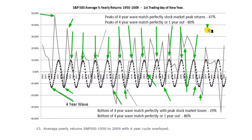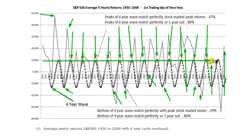Peak market returns for early 2000 were exactly predicted by the four-year cycle, followed by a pullback. To recap: 47% of the time the four-year cycle predicted the peak market returns accurately. The wave peak was also accurate or one year out 80% of the time. And in 93% of the cases of the wave peaking, the S&P made positive returns — 93% of the time. Nearly every single peak except one is a positive return for the market in that year. That is an impressive statistic and shows that there are actually cycles operating in the marketplace.